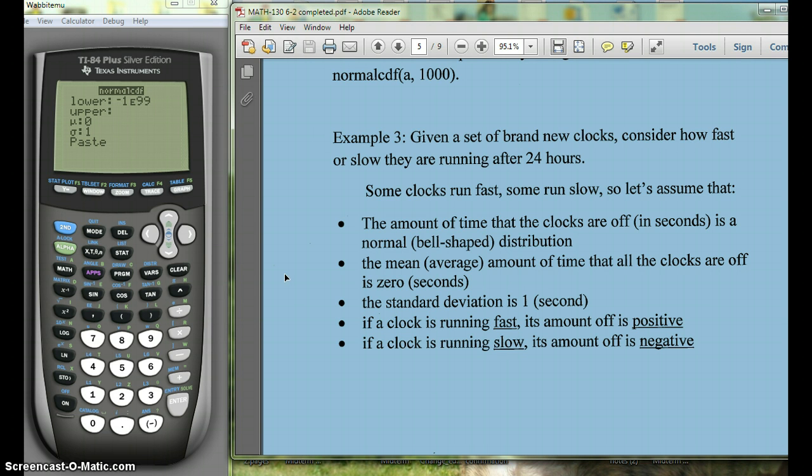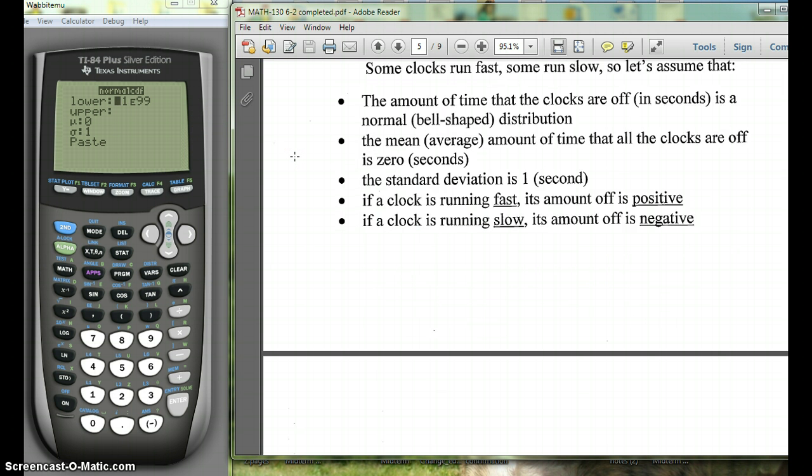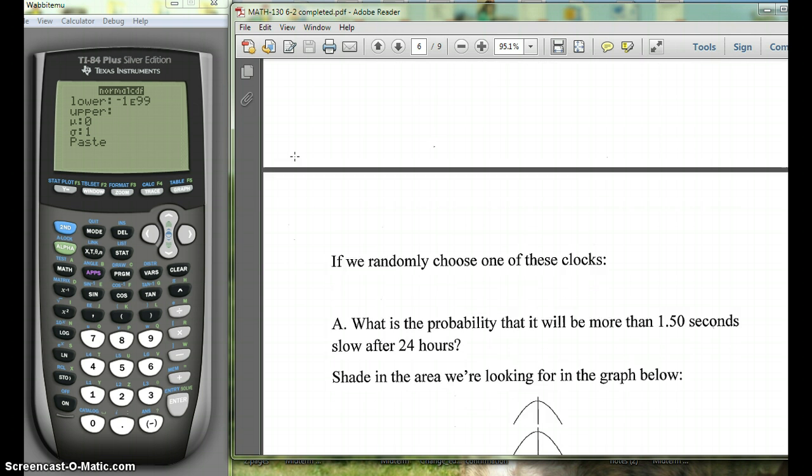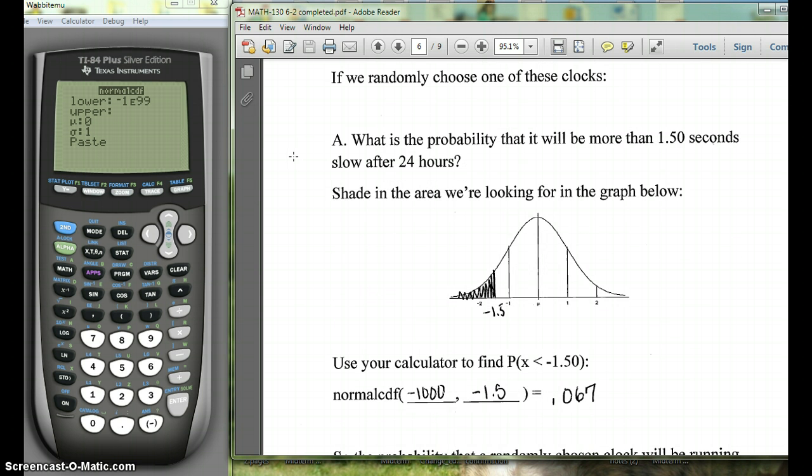And this is for the standard normal. If you have a non-standard normal, you can change the mu and the sigma. So this is the problem about the clocks. This is a standard normal, so our mu is going to be 0, our sigma is going to be 1. And this first problem says, what's the probability that a single clock will be more than 1.5 seconds slow? So more than 1.2 seconds slow.